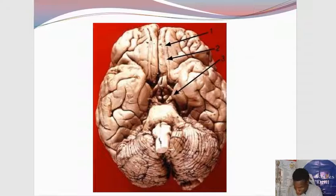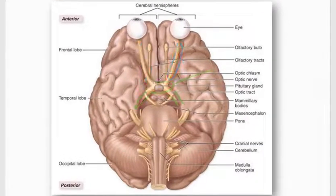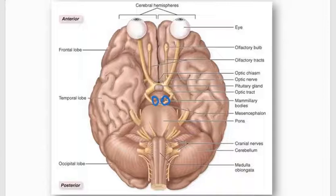Another structure to draw your attention to is these two bumps — the mammillary bodies. They are the terminal points for the fornix. The fornix terminates somewhere on the mammillary bodies. So the mammillary bodies can be pinned and you'll be asked to identify them. Looking at this zoomed-in picture of the interpeduncular fossa, we have parts of the olfactory tract, the optic chiasma, and immediately posterior to the optic chiasma is one beautiful endocrine gland — the pituitary gland.